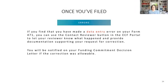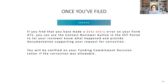If you've already filed and discover an error, you can correct it by clicking the 'Contact Reviewer' button in the portal and explaining what happened. If the dollars are off or you transposed something, provide documentation showing where the error occurred. You'll be notified on the funding commitment decision letter whether the correction was allowable, and reviewers are generally good about talking you through it.